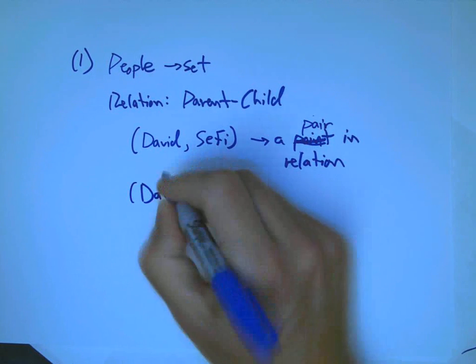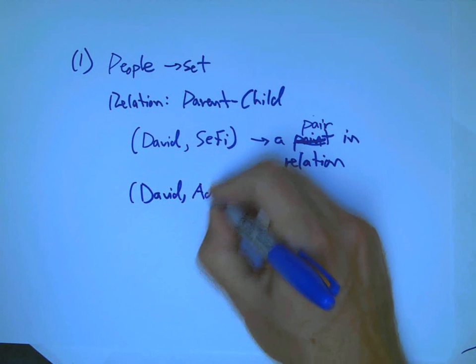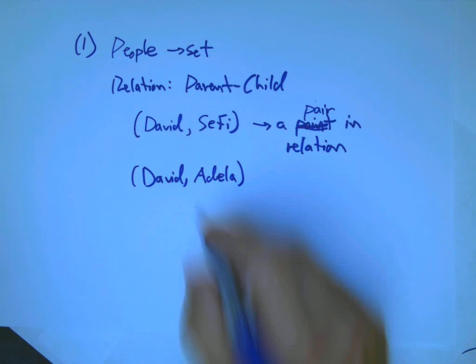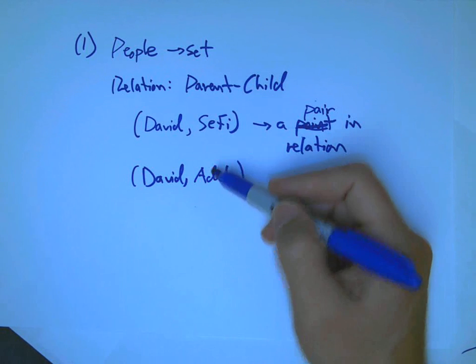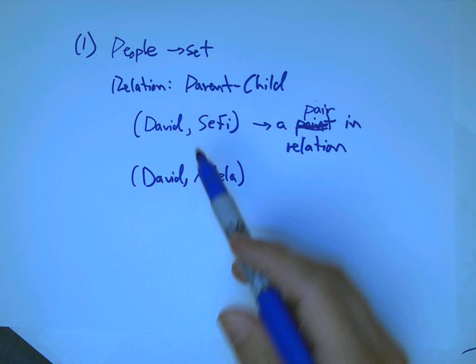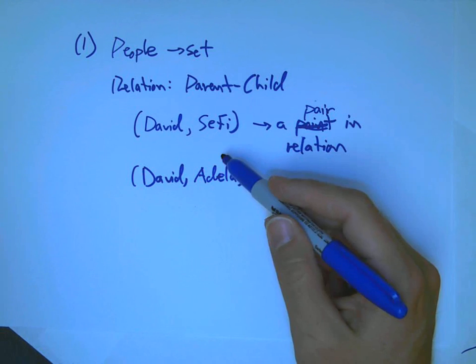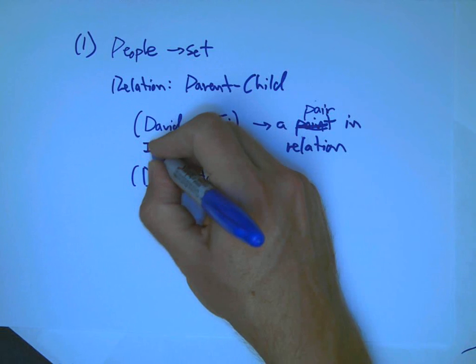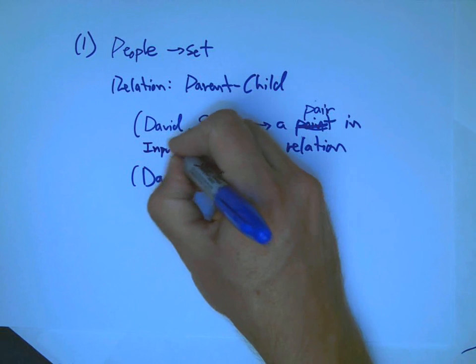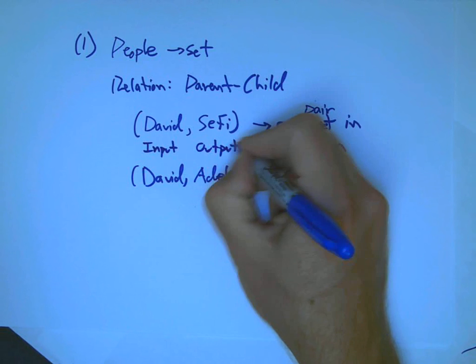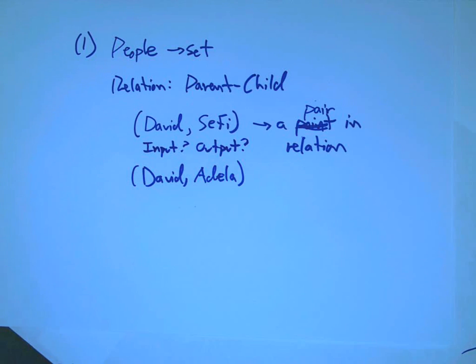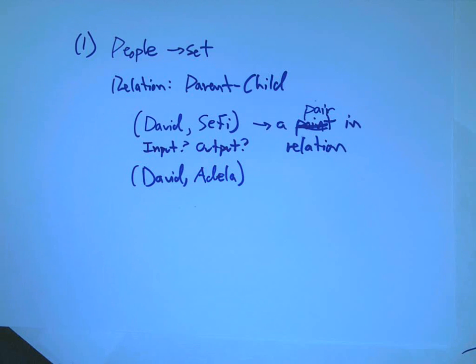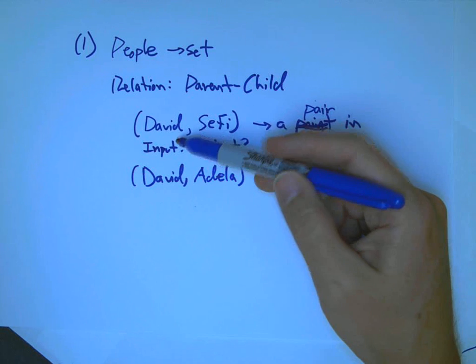And another would be, I am the parent of my daughter, Adela. And one thing that tells you right away is the answer to the question, is this relation a function? Is there, for any input, we're thinking of this, if we, as we usually do, we think of the first thing as the input, and the second thing as the output, does that make a whole lot of sense? Or in other words, does it make it a function? Or does it make one, make it one of those relations that's not a function?